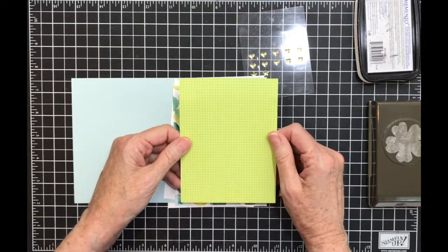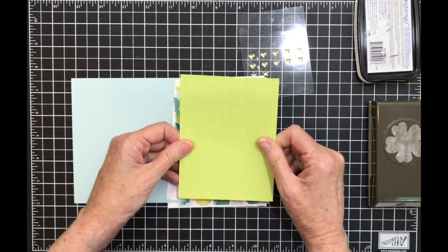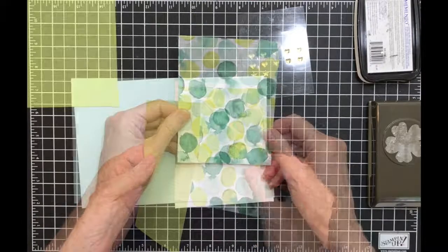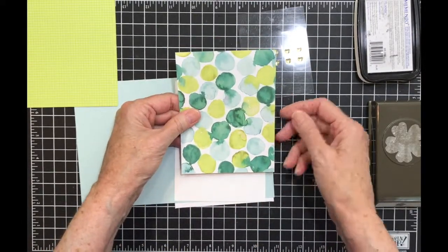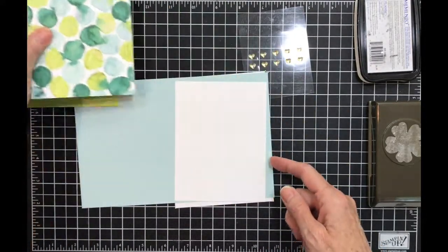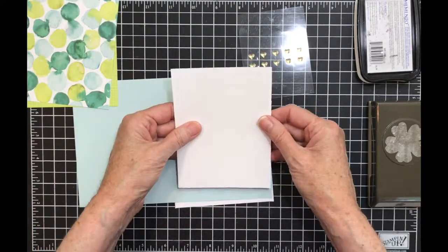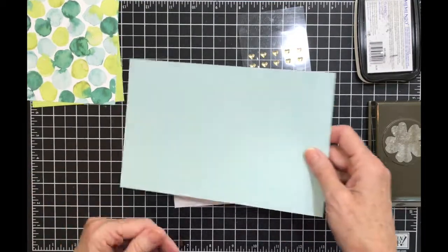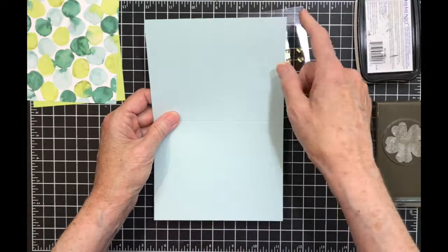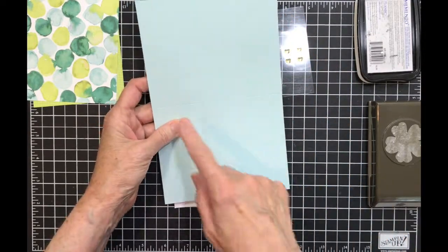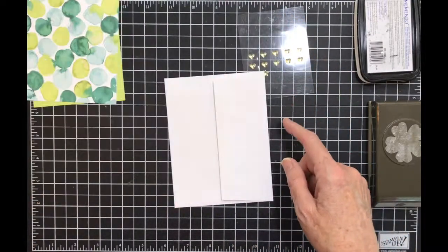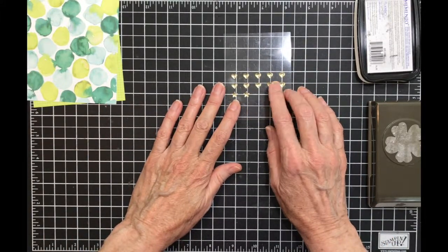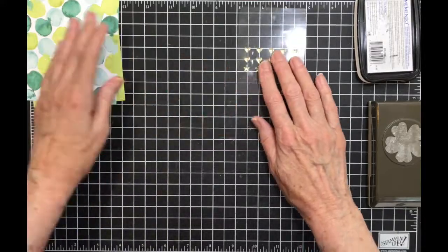I have a piece of the Tutti Frutti Designer Series paper and it's 4 by 5 1/4. I have a piece of Naturally Eclectic Designer Series paper that's 4 by 5 1/4. I have a piece of Whisper White that's 4 by 5 1/4. My card base, which is Soft Sky, measures 5 1/2 by 8 1/2. I scored it at 4 1/4. I have my envelope and I have some of the gold enamel shapes. I'm going to use the hearts.